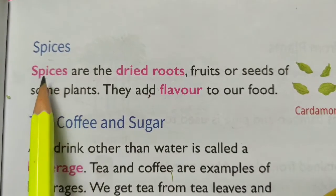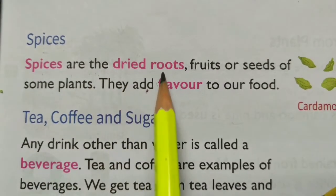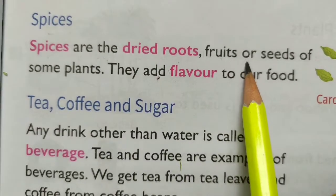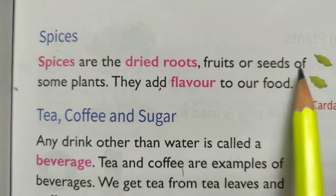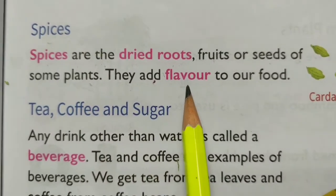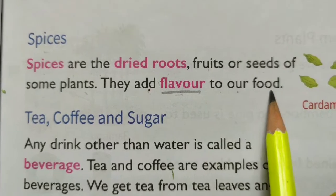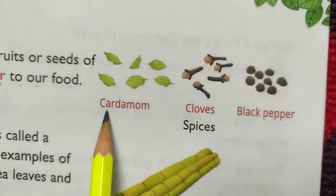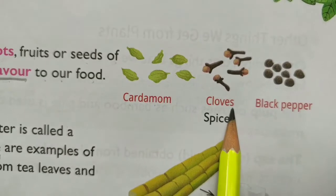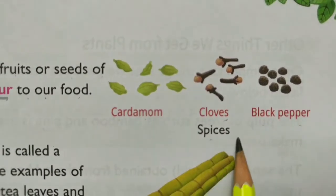Spices. Spices are the dried roots, fruits or seeds of some plants. They add flavor to our food. Cardamom, cloves and black pepper are spices.